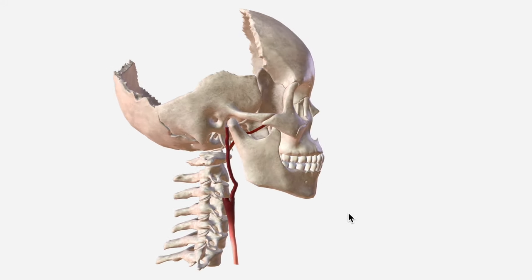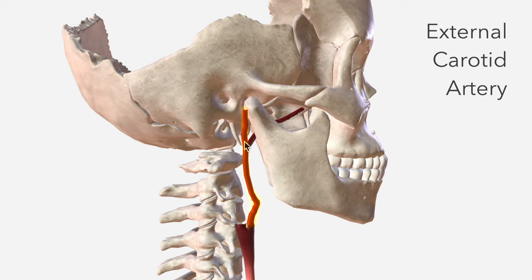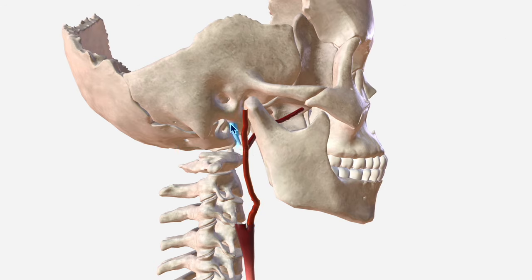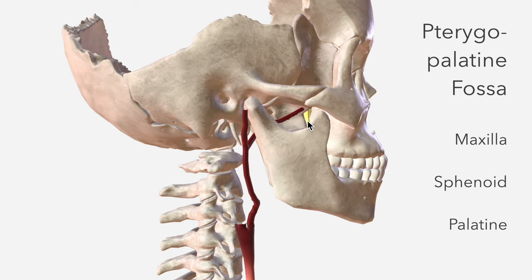In this video, we're going to talk about the maxillary artery, which is one of the terminal branches of the external carotid. Departing around the level of the tip of the styloid process, the maxillary artery winds around the neck of the mandible bone to move into the deep structures of the face and eventually terminate by division within the pterygopalatine fossa — the space between the maxilla, the sphenoid, and the palatine bones.